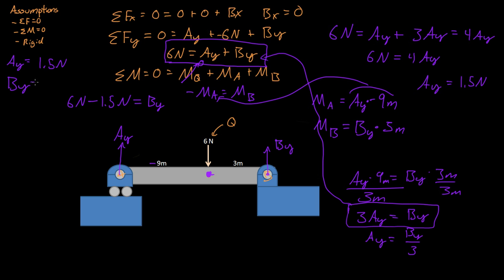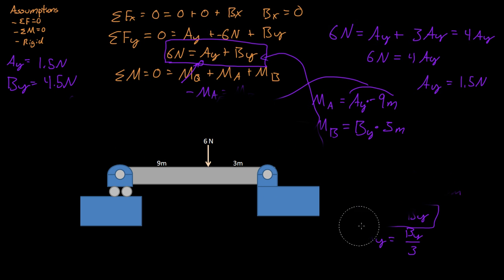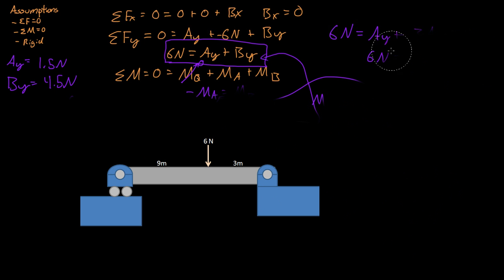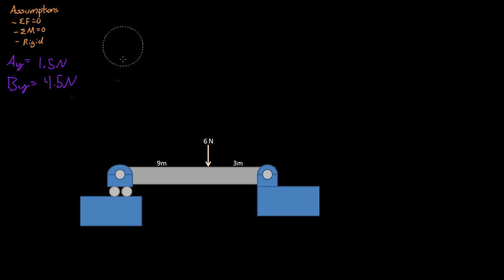So BY is equal to 4.5 Newtons. We now know what A and BY are. So what does that have to do with shear, the shear diagram and moment diagrams?